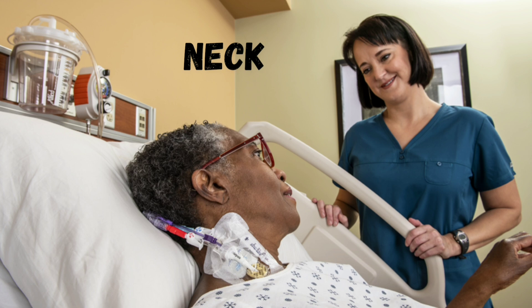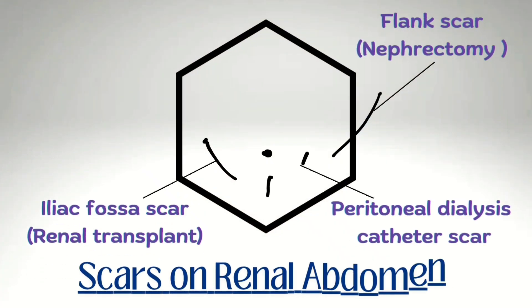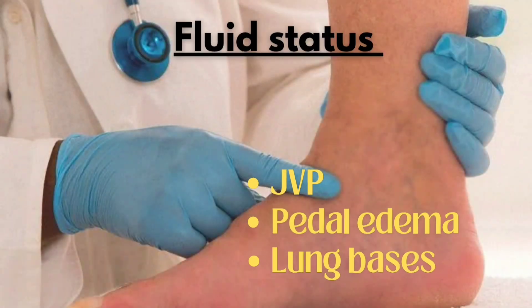In the neck, examine for a double-lumen catheter, porta-cath, or previous mode of renal replacement therapy. In the abdomen, look for scars — it can be an iliac fossa scar, that is the Rutherford Morrison scar for renal transplant; in the flank, look for a nephrectomy scar and peritoneal dialysis catheter scar below the umbilicus. Also check the fluid status of the patient — whether there is raised venous pressure, pitting pedal edema, and fine crepitations on bilateral lung bases.